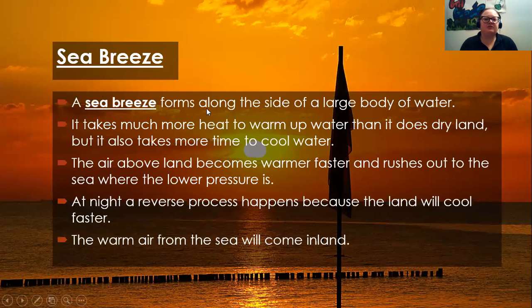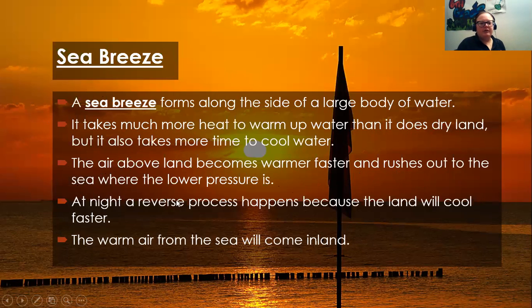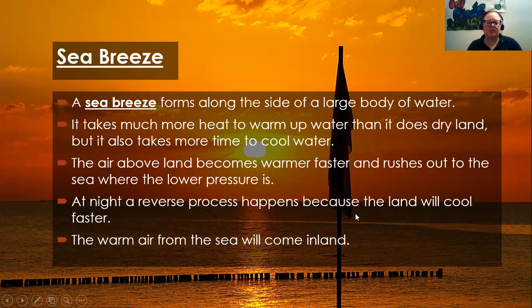A sea breeze forms along the side of a large body of water. It takes much more heat to warm up water than dry land, but it also takes more time to cool water. The air above land becomes warmer faster and rushes out to the sea where the lower pressure is. At night a reverse process happens — because the land cools faster, the warm air from the sea will come inland.